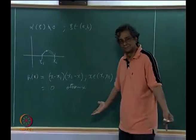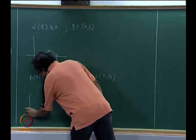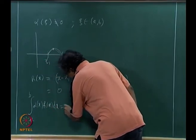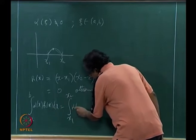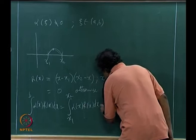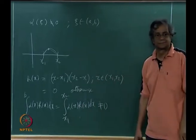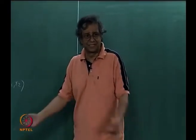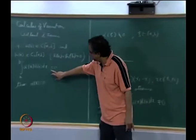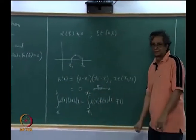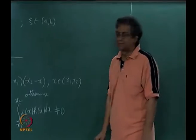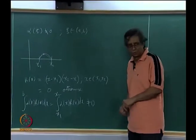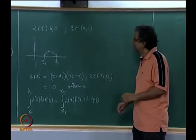Then the integral from a to b of α(x)·h(x) dx equals the integral from x₁ to x₂ of α(x)·h(x) dx, which is not zero — violating my guarantee. The only way I can guarantee the integral is always zero is if α(x) ≡ 0 identically everywhere. This lemma is a warm-up to get a feel for where we are going.